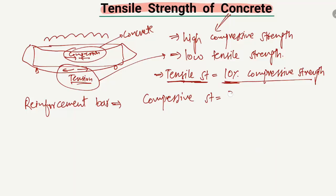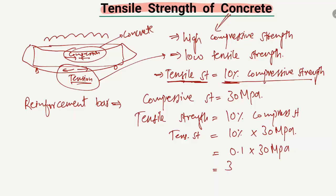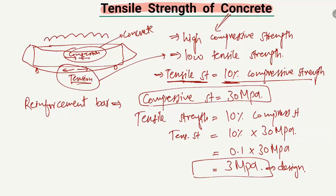So if the compressive strength is 30 MPa, the tensile strength equals 10% multiplied by 30 MPa, which is 0.1 × 30 = 3 MPa. So the tensile strength of concrete is only taken as 3 MPa in design when the compressive strength is 30 MPa — really low, only 10% of the compressive strength.